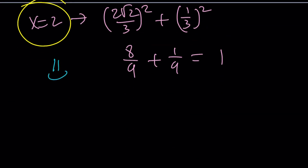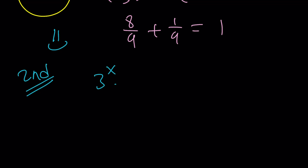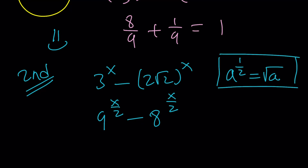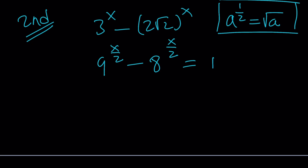Now for the second method, which is a little different. Because of the square roots, we can write 3^x as 9 to the power x over 2, and 2 root 2 to the x as 8 to the power x over 2, since any number to the power one half means square root. Since x over 2 repeats, let's substitute t equals x over 2. We get 9 to the t minus 8 to the t equals 1.